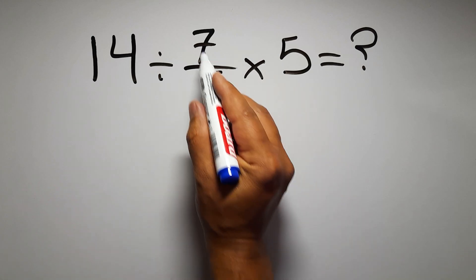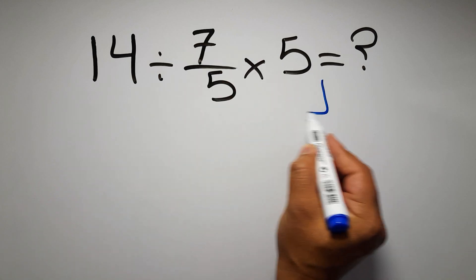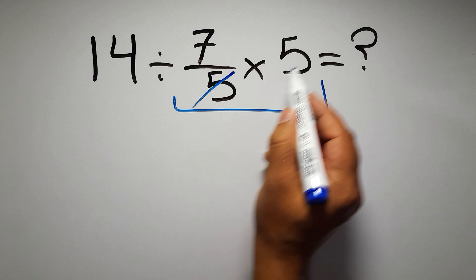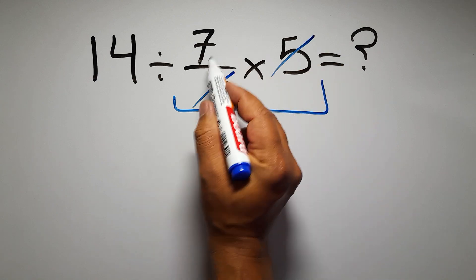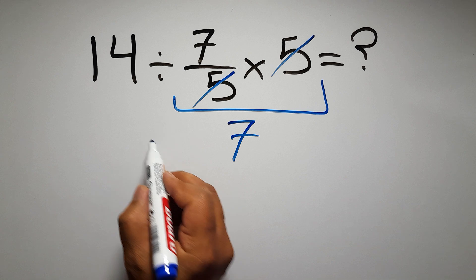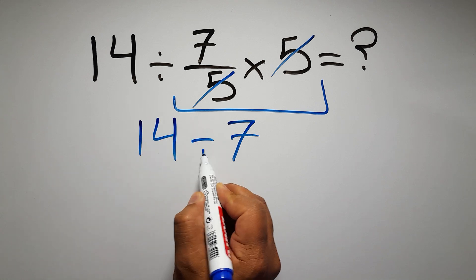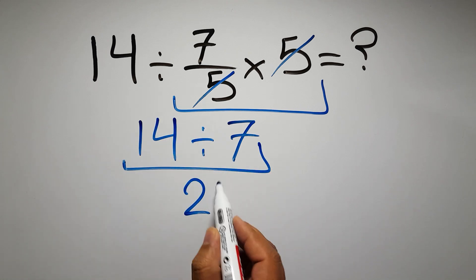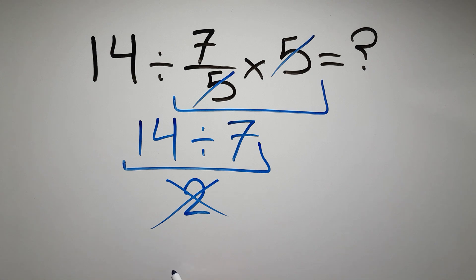First, we do this multiplication: 7 over 5 times 5. We can easily cancel this 5 and this 5, so here we have just 7, and 14 divided by 7 equals 2. But this answer is not correct, because according...